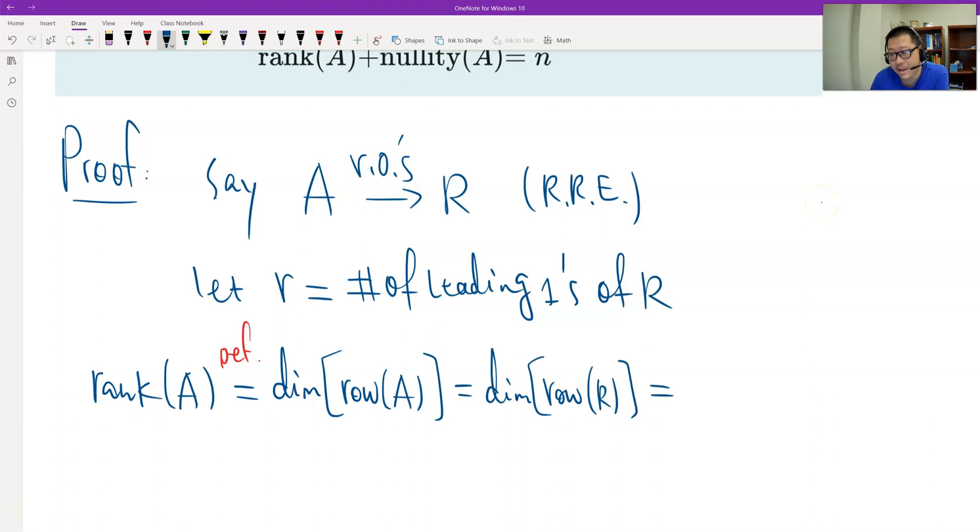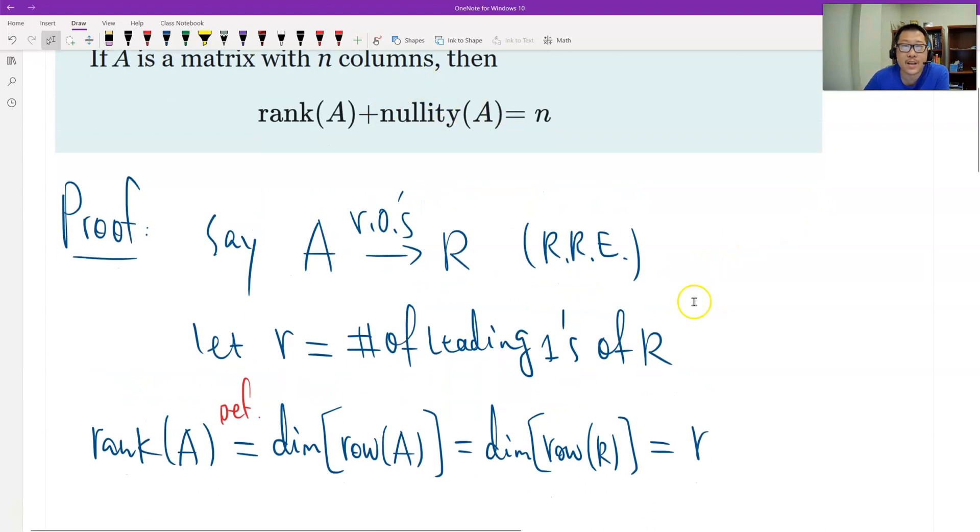And then, again, this is a special matrix, reduced row echelon. The dimension equals r, the leading ones. And that's, we use the same result that we learned before. And now, we calculate the nullity of A.